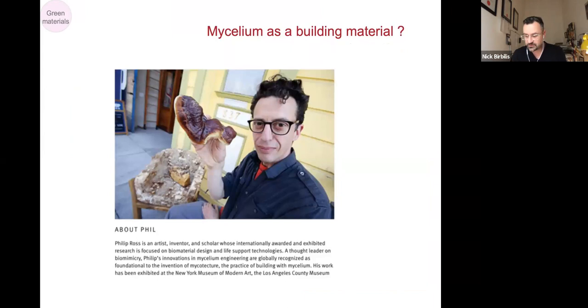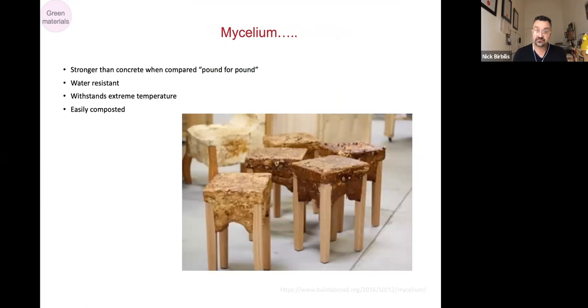And so to this end, answers lie often in the darndest of places. Here we see an artist, an inventor called Phil Ross, who's a famous artist actually, in his studio or outside his studio in San Francisco, and he started using mycelium, which to cut a long description short, is a precursor of matter prior to mushrooms becoming a fruit. And by using this, he was able to grow mycelium into molds to make furniture.